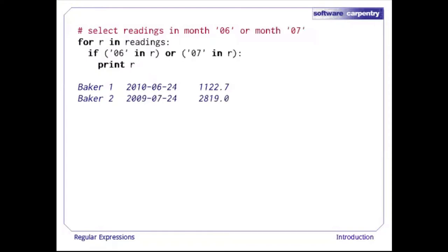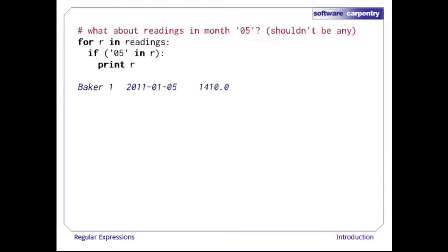If we want to select data for two months, we have to say if '06' in the record or if '07' in the record. We should realize there's a problem here: if we say '05' in record, it isn't matching against the month — it's matching against the day. Right now we have no easy way to distinguish those two cases. This is a problem we'll come back to later.